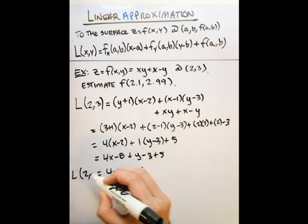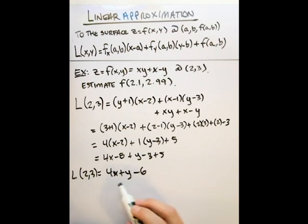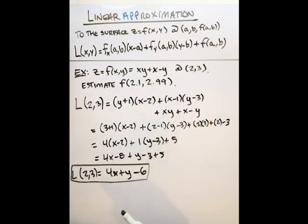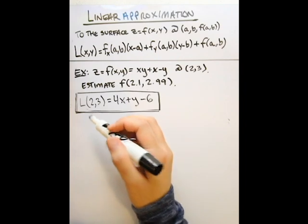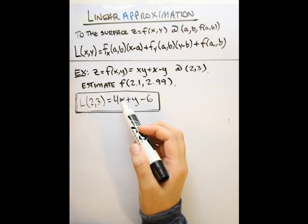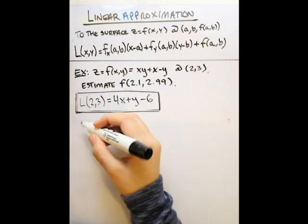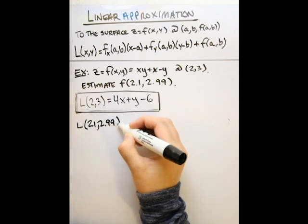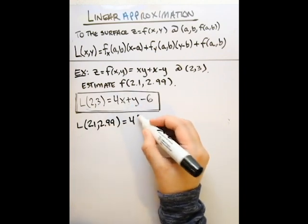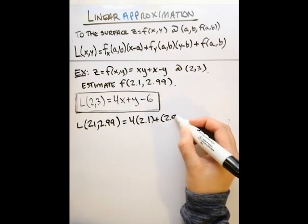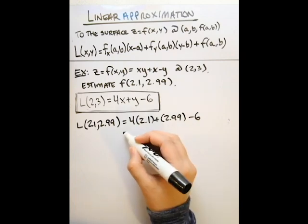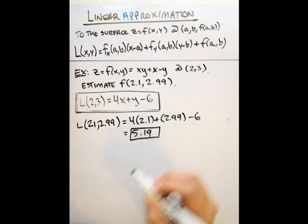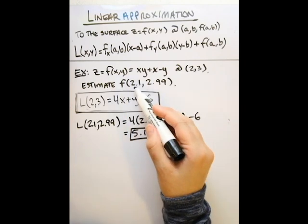This is our linear approximation at 2, 3. Now we're going to use this to approximate our function at 2.1, 2.99. We want L of 2.1, 2.99, which equals 4 times 2.1 plus 2.99 minus 6. Simplifying, we end up getting 5.19. So this is our approximation for our function at this given point.